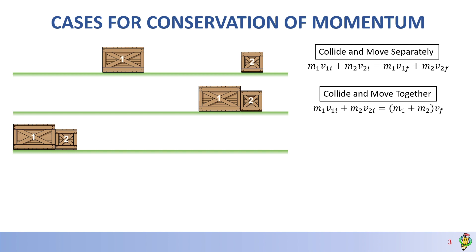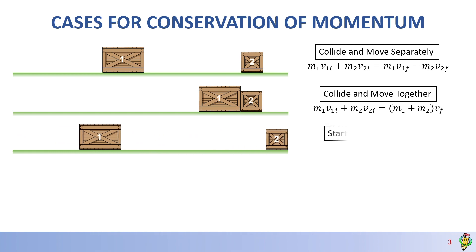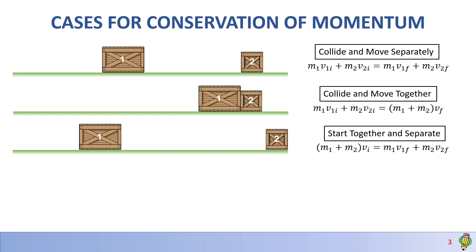Case 3: The blocks collide and in this case block 2 is moving at its own final velocity after the collision, giving the equation M1·V1_final + M2·V2_final on the right-hand side.